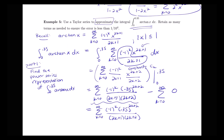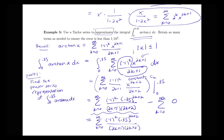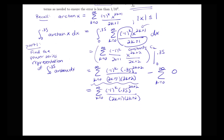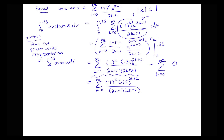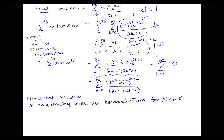We want to approximate it so our error is less than 1 over 10 to the 4th. We consider the different remainder theorems available. Notice that this series is an alternating series, so we can use the alternating series remainder theorem, which states that our absolute error is less than or equal to the magnitude of the n plus 1th term.